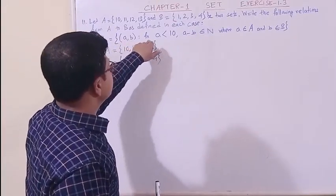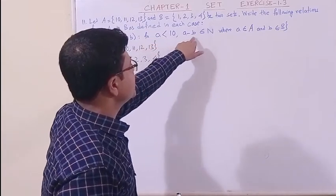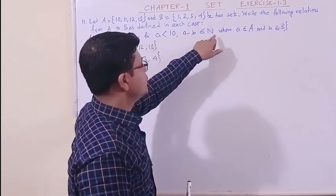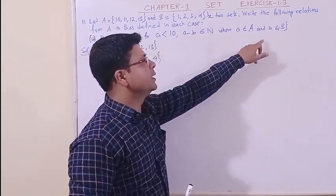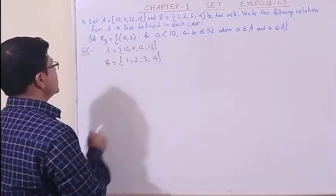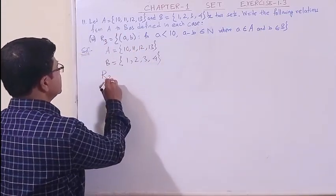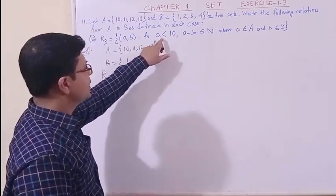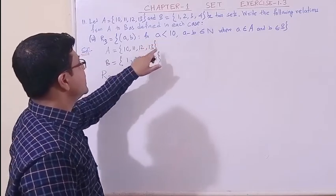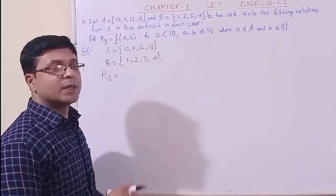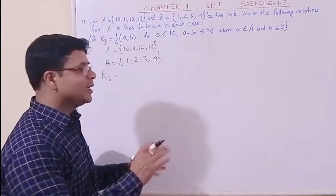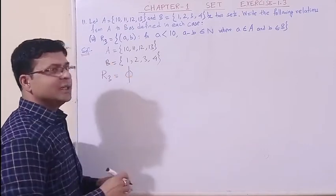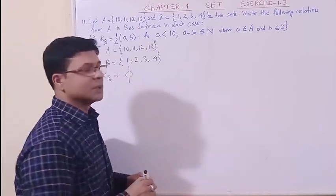Okay students, now we have got part 3. The relation R3. The ordered pair is (a, b) for a less than 10 and a minus b, that is the difference of the two components, belongs to N where a belongs to A and b belongs to set B. Here dear students, we have to write the relation. If you look carefully, the first component of each element of the ordered pair is less than 10. But no element is less than 10, so what type of relation it would be? It would be a null relation. Yes, correct. And how we represent null relation? Like this. Okay, in this way we have completed the solution of question number 11.